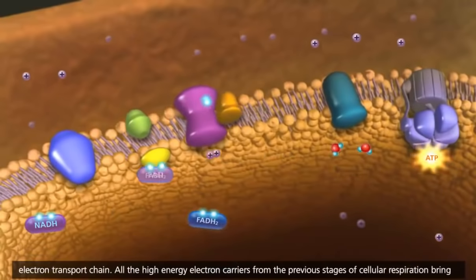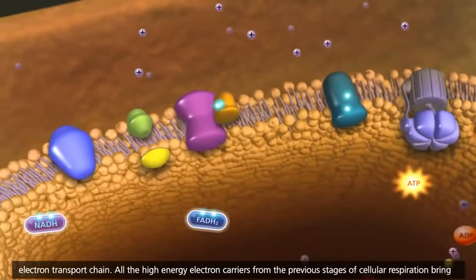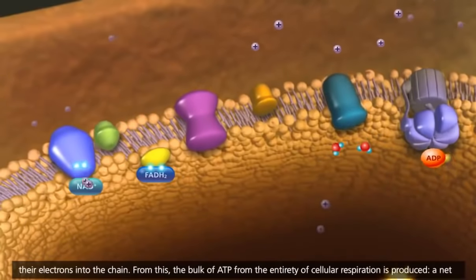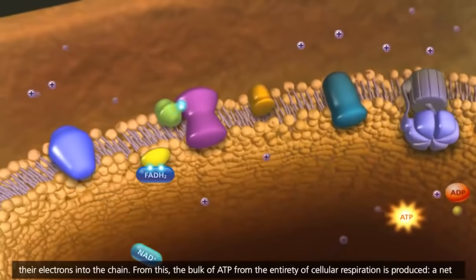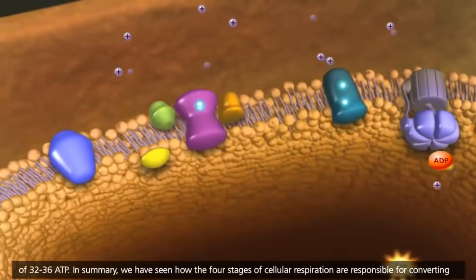All the high-energy electron carriers from the previous stages of cellular respiration bring their electrons into the chain. From this, the bulk of ATP from the entirety of cellular respiration is produced. A net of 32 to 36 ATP.